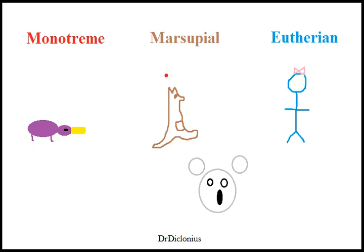A marsupial — we're all probably familiar with — is like a kangaroo or a koala. Marsupials have a pouch, and in this pouch is where the development occurs essentially. These marsupials do give birth to live young; they don't give birth to eggs like the monotremes do. These young then develop while still inside the pouch.